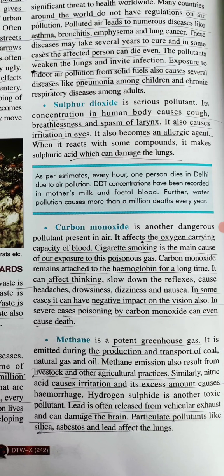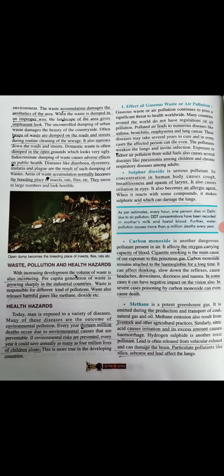Methane is a potent greenhouse gas present in the atmosphere, emitted during the production and transport of coal, natural gas, and oil. It is also produced from livestock, agricultural practices, and improperly managed agricultural waste left for long periods. Excess methane can cause irritation and hemorrhage. Hydrogen sulfide is another toxic pollutant. Lead, often released from vehicular pollution, affects plants and particulate pollutants like silica and asbestos damage the lungs. All these air pollutants together affect human health very badly.